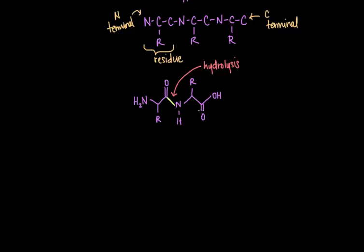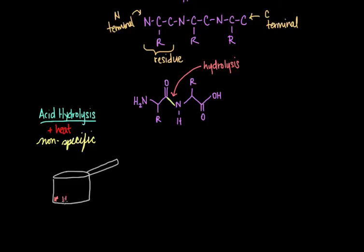And those two means are with the help of strong acids or with proteolytic enzymes. So when we use strong acids, we call this acid hydrolysis. And acid hydrolysis, when combined with heat, is a nonspecific way of cleaving peptide bonds. So say you have a long polypeptide chain, and then you throw this polypeptide into a pot with some strong acid and then turn up the stove to add a little heat. Then you would just end up with a jumbled up mix of amino acids as each of the peptide bonds gets cleaved.